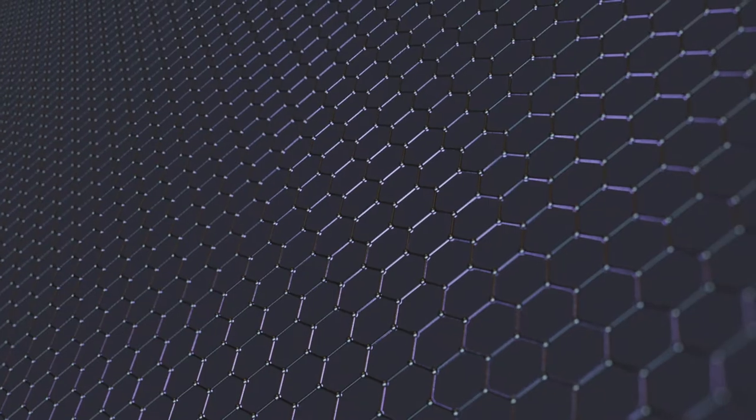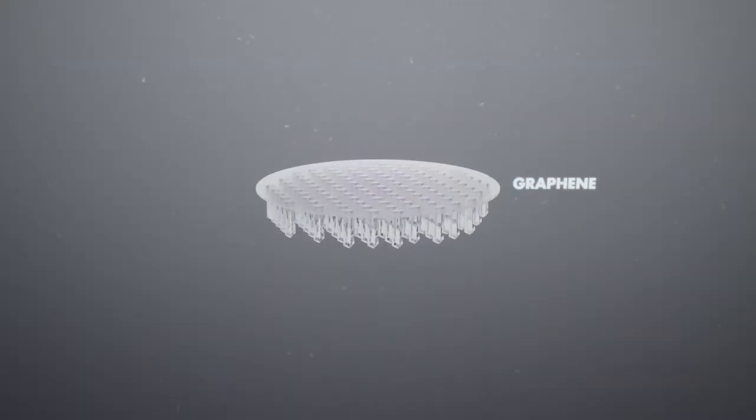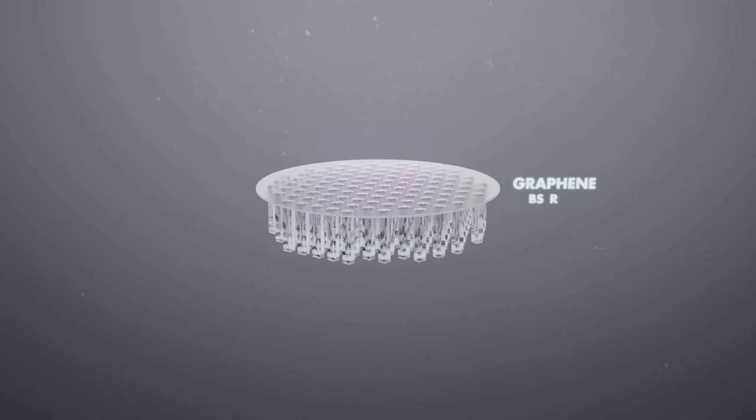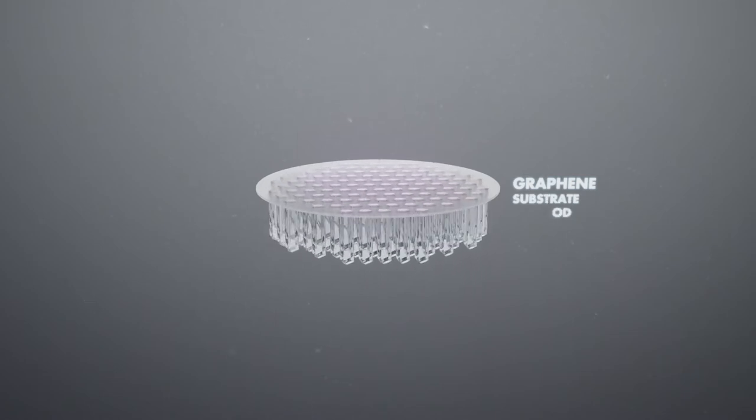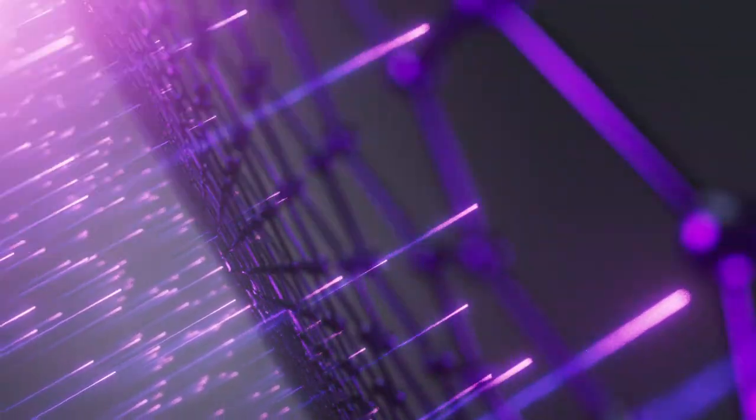Instead, we use graphene. Graphene is transparent to all wavelengths, and by using it as both a substrate and electrode, we create a thin and elegant design that lets the UV light through.